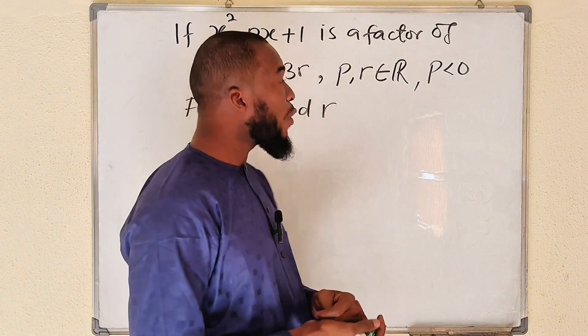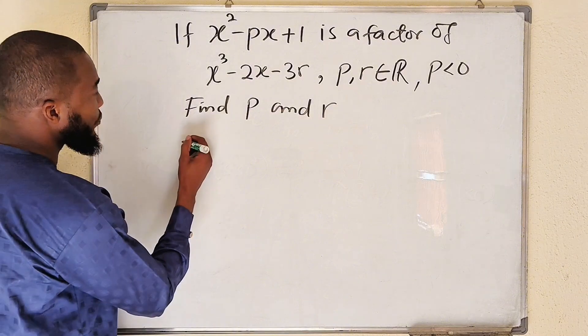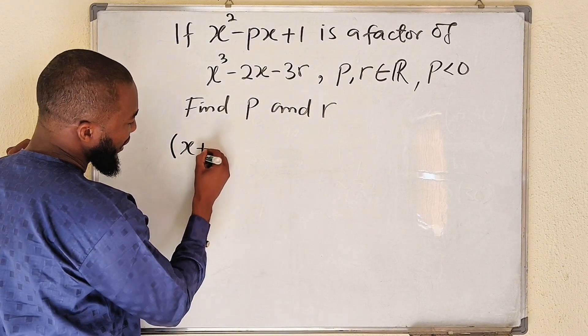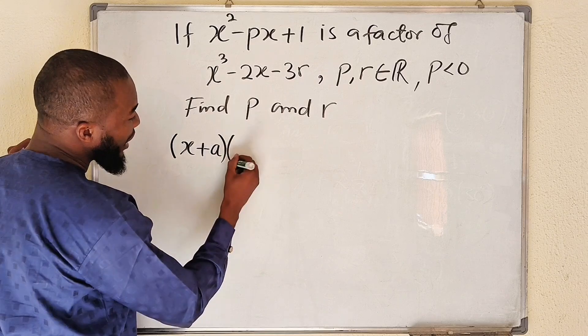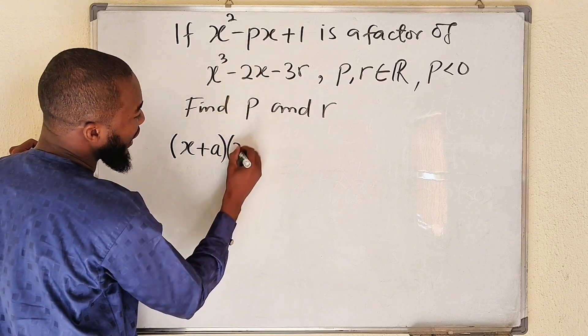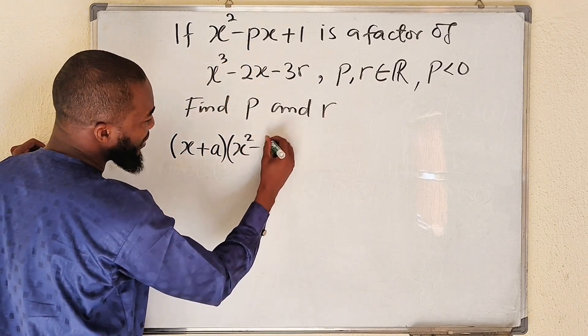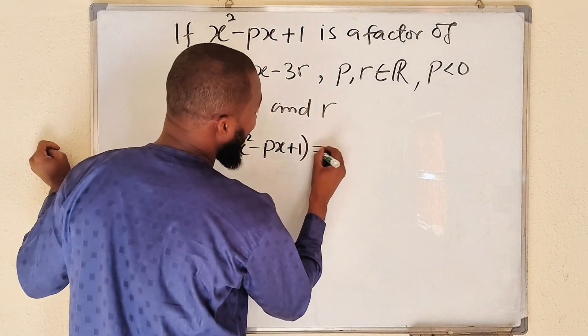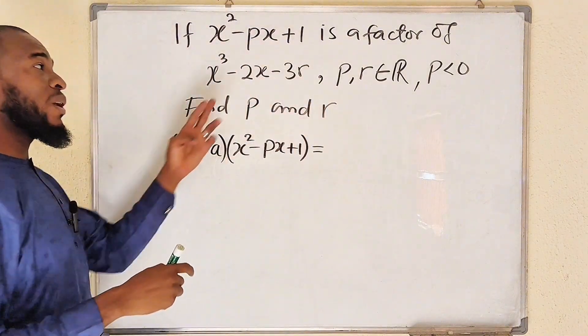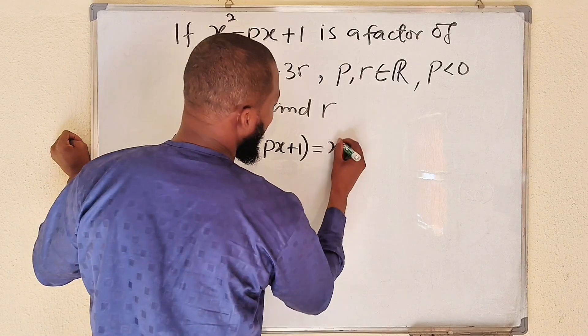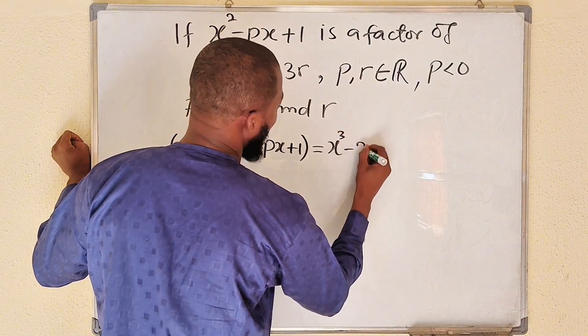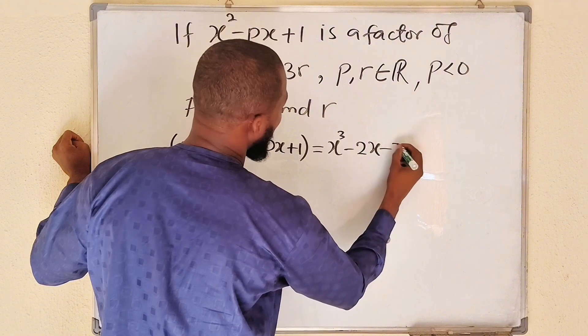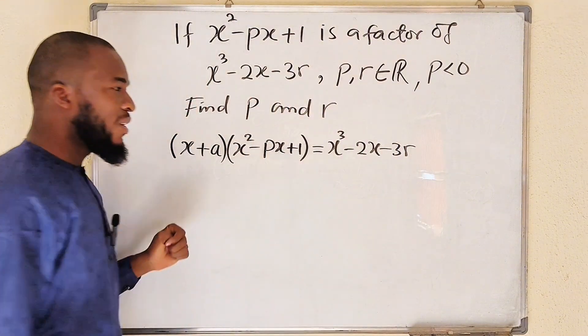Therefore, x plus a, if multiplied by this quadratic function x squared minus px plus 1, we shall obtain, or we should expect to get this: x cubed minus 2x minus 3r. What do we do? Let us expand this and relate the coefficients.